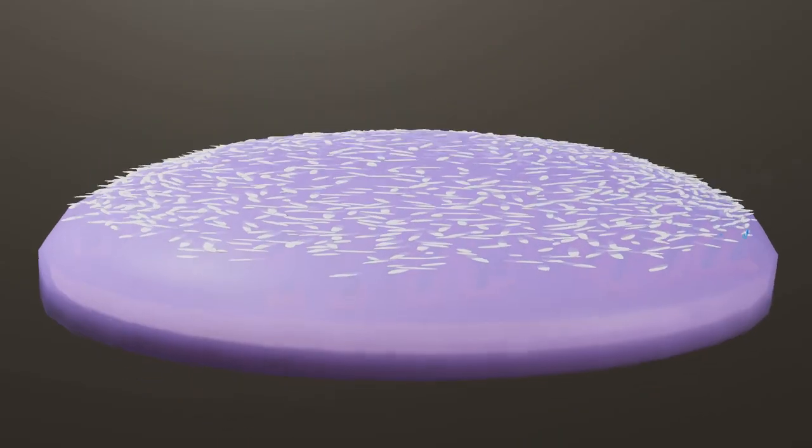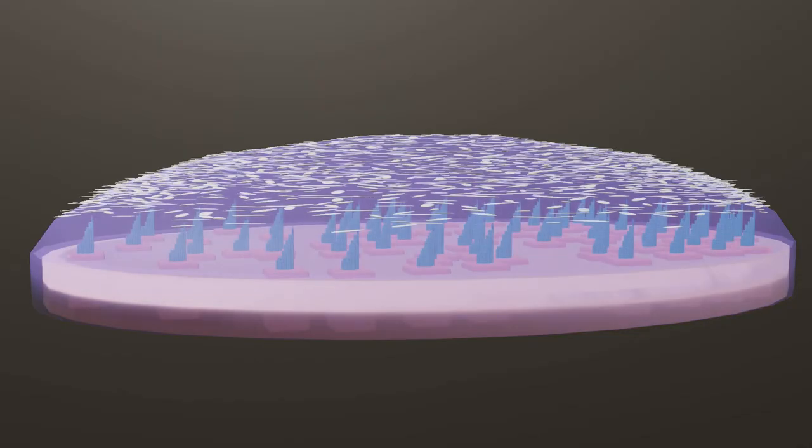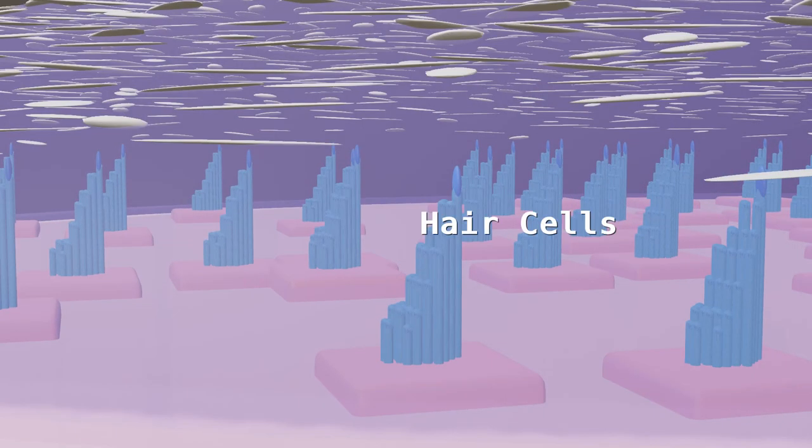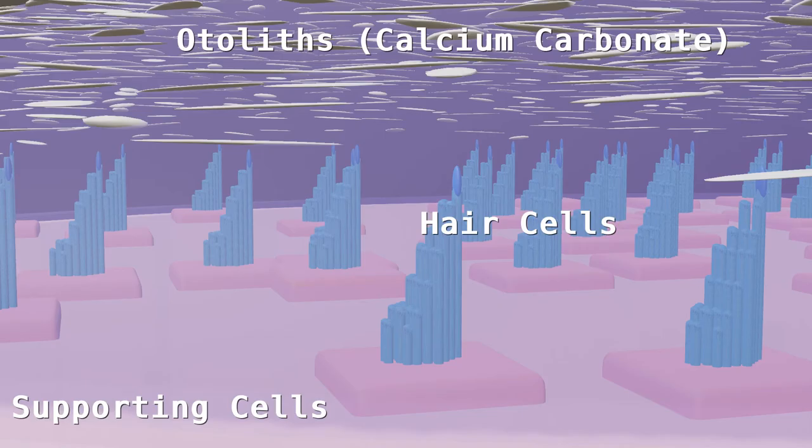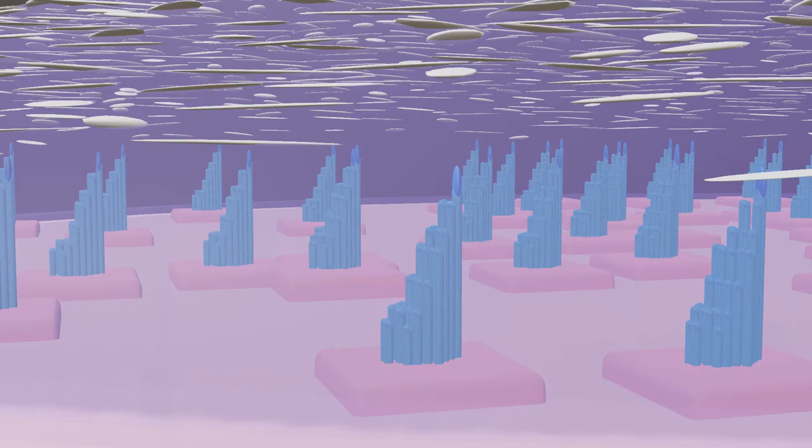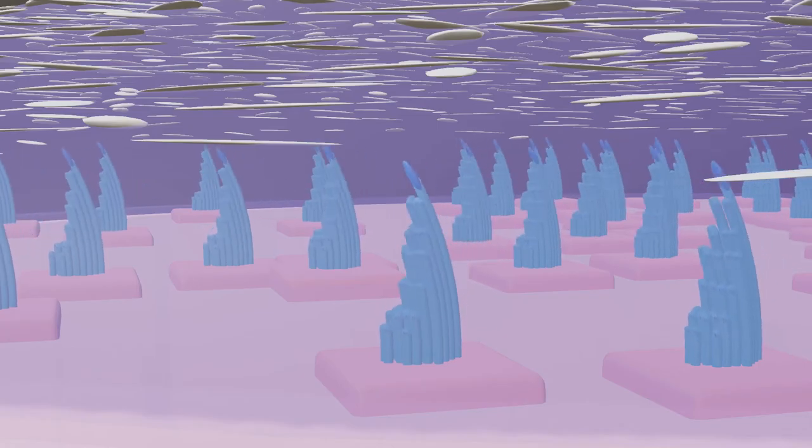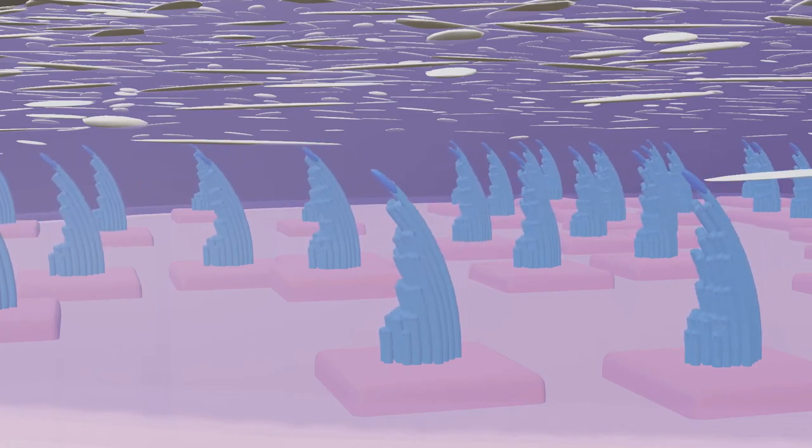Each macula consists of a layer of supporting cells with interspersed sensory hair cells. The hair cells have stereocilia, hair-like structures, that produce a 90 to 100 hertz impulse to the brain when at rest. The stereocilia are embedded in a gelatinous membrane. This membrane has calcium carbonate crystals embedded in it giving it added weight. These are known as otoliths. Bending of the hair-like structures increases the impulse frequency in one direction and decreases it in the other.